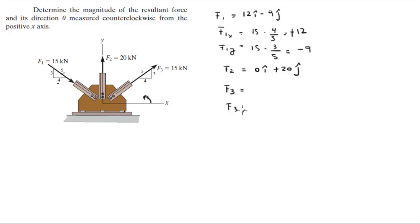F3 has an x-component and a y-component. The x-component is given by 15 times 4 over 5 and it comes out to be 12. And the y-component is 15 times 3 over 5 and it comes out to be positive 9.